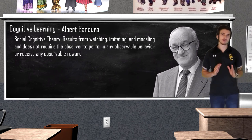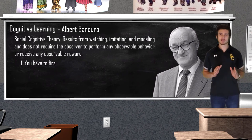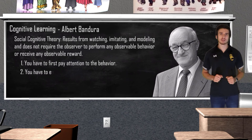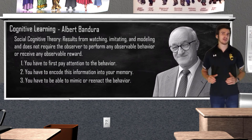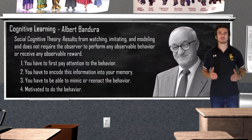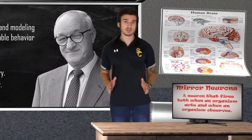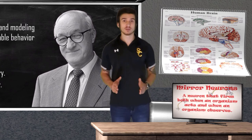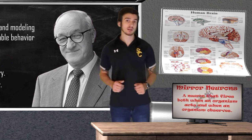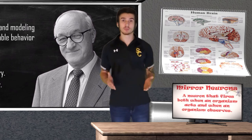To successfully learn through observation, Bandura stated that you have to first pay attention to the behavior, then this information has to be encoded into your memory, you have to be able to mimic or reenact the behavior, and finally you have to have the motivation to want to do the behavior — there has to be something in it for you. There is biological proof to support Bandura's theory: when hooked up to a brain scan, we see that when someone is observing a behavior or an action, mirror neurons are activated, creating similar synaptic connections that are made when actually performing the behavior, therefore strengthening it.